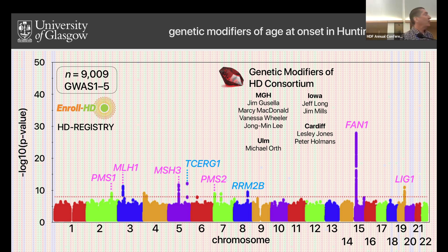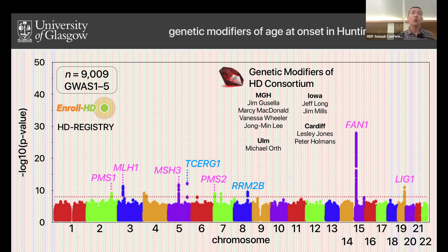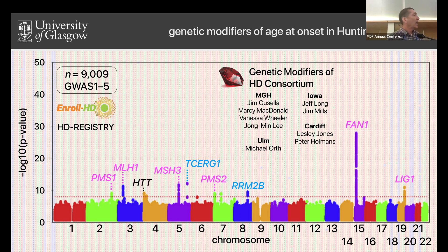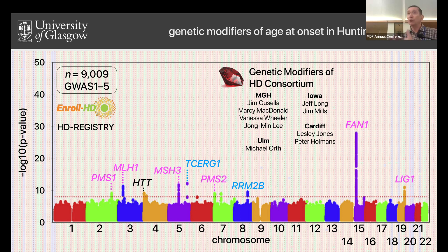Other genes came up: TSURG1 and RRM2B, whose role is currently not known. It's plausible they might have some role in somatic expansion, or they may be involved in some downstream processes. What's quite clear is that the majority of genes coming up here are involved in DNA repair. We also found a hit at the Huntington's disease locus itself. Given that we thought we'd already corrected for the number of CAG repeats, we didn't expect the HTT gene to come up, but there's a reason why it does — which I'll come back to.